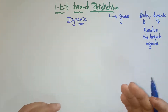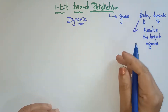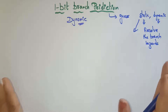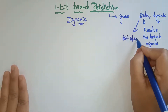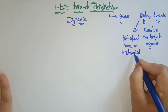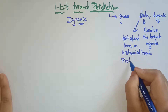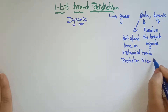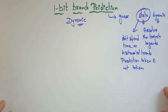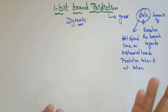Static resolves branch hazards by assuming a given outcome and proceeding without waiting to see the actual branch outcome. It does not spend time on historical trends — it always starts with a prediction of either taken or not taken. That is what static branch prediction does.